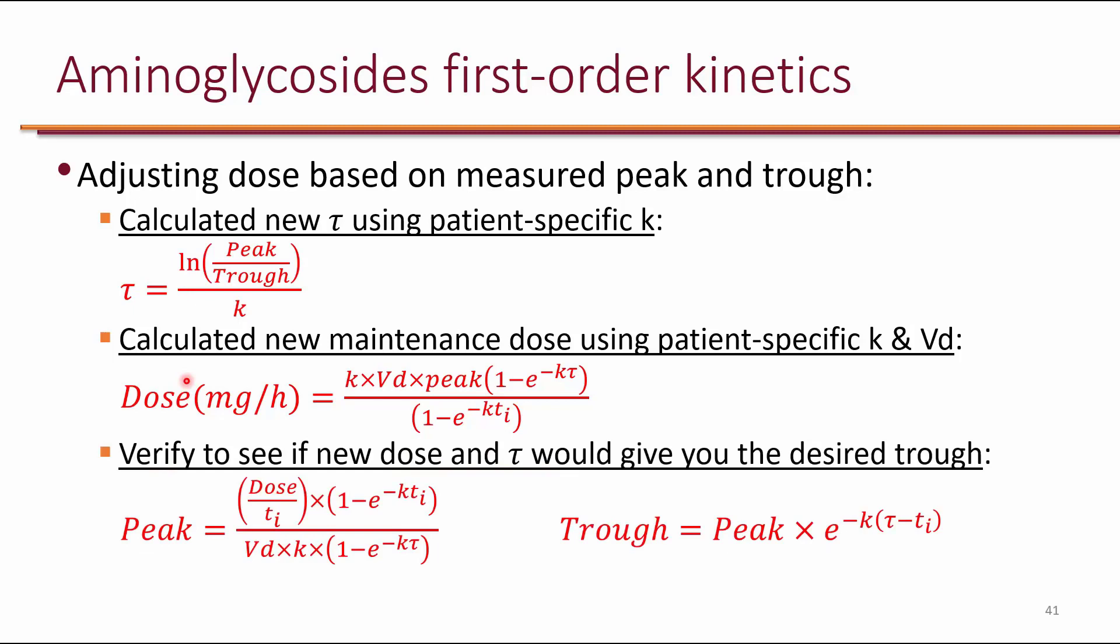Once we get the dose and tau, then we can actually verify to see if the new dose and frequency is going to give us the peak and trough that we want. We can use this to estimate what peak we can expect from this dose and frequency. So you plug it in, and it will tell you what the peak is. Then you use this peak to see what trough it would give you. That's how you verify to see if the dose and frequency that you're about to recommend is actually going to give you the goal peak and trough.